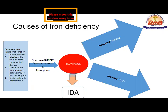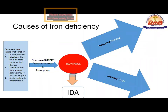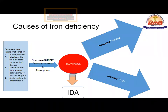Any surgery affecting the initial part of the intestine — duodenum and proximal jejunum — such as gastrectomy, will reduce the main absorption area for iron, leading to decreased absorption. In any acute or chronic inflammatory condition, iron absorption also decreases. Why iron absorption decreases in systemic inflammatory disease is a question to consider — we will address it after the lecture.